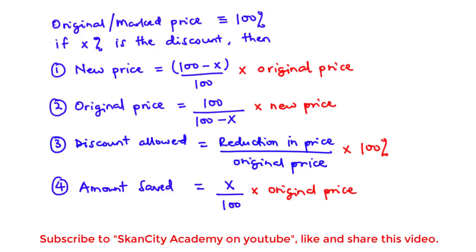Notice that the value of the original price or the marked price is always equivalent to 100 percent. Now, given that x percent is the discount, we can find the new price by using the formula: (100 minus x) divided by 100, times the original price.